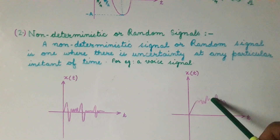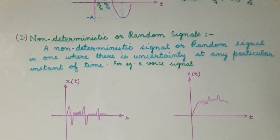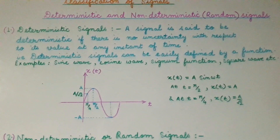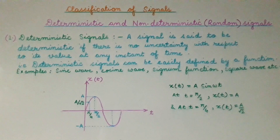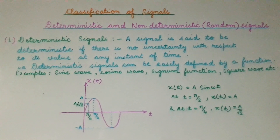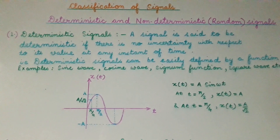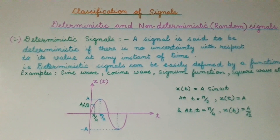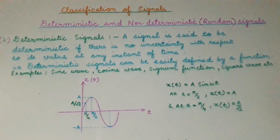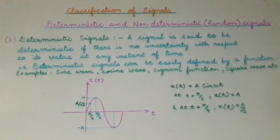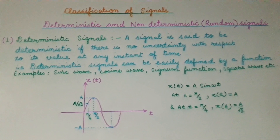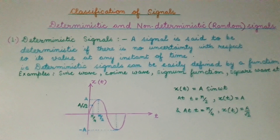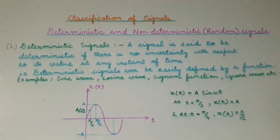So this is what we call a random signal or a non-deterministic signal. In a deterministic signal, we can define that signal by a function and there is no uncertainty in its value at any instant of time. Whereas in the case of a random signal, there is uncertainty in its amplitude at any instant. Hope you understood the difference between the deterministic and the non-deterministic or random signals. That's all in this presentation — see you in the next one.